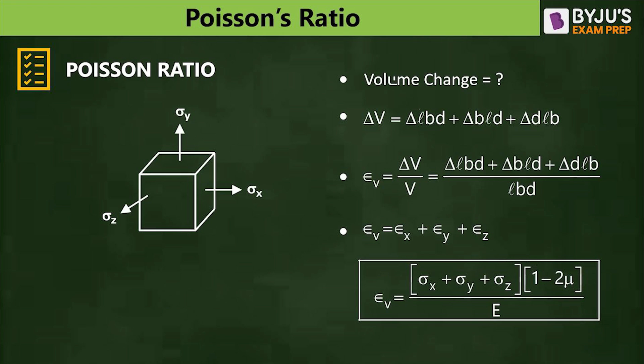Poisson's ratio varies from −1 to 0.5 for all substances. For metals, it is 0 to 0.5. For ductile metals it is 0.25 to 0.33, that is 1/4 to 1/3. To repeat: μ for all substances ranges from −1 to 0.5; μ for metals is 0 to 0.5; μ for ductile metals is 0.25 to 0.33. A μ value of 0.5 corresponds to rubber or a perfectly plastic material.